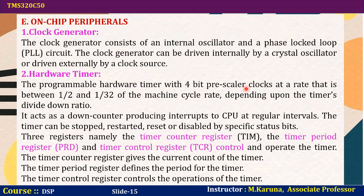The hardware timer uses a 4-bit pre-scaler clock set at a rate between 1/2 and 1/32 of the machine cycle rate, depending upon the timer's divide-down ratio. It acts as a down counter producing interrupts to the CPU at regular intervals. The timer can be stopped, restarted, reset, or disabled by specific status bits. It consists of three registers: timer counter register (gives the current count), timer period register (defines the period), and timer control register (controls operations of the timer).